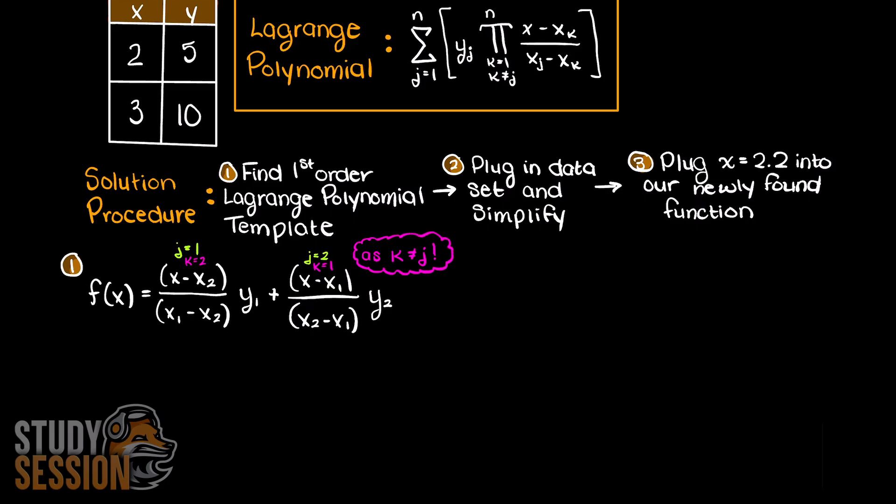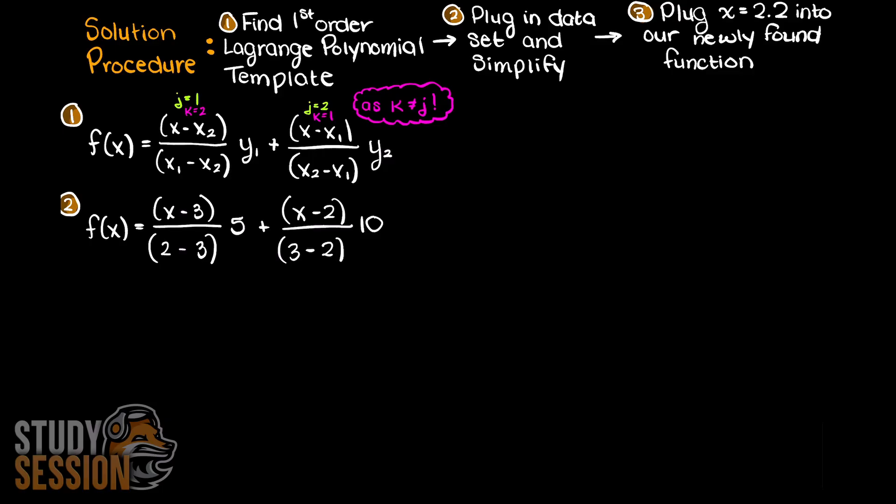We must now plug in our data points and simplify such that the Lagrange polynomial is fit to our specific problem. Since first order Lagrange polynomials are quite simple, I am going to go ahead and simplify the solution now. This leaves us with 5x minus 5, which is actually a straight line.